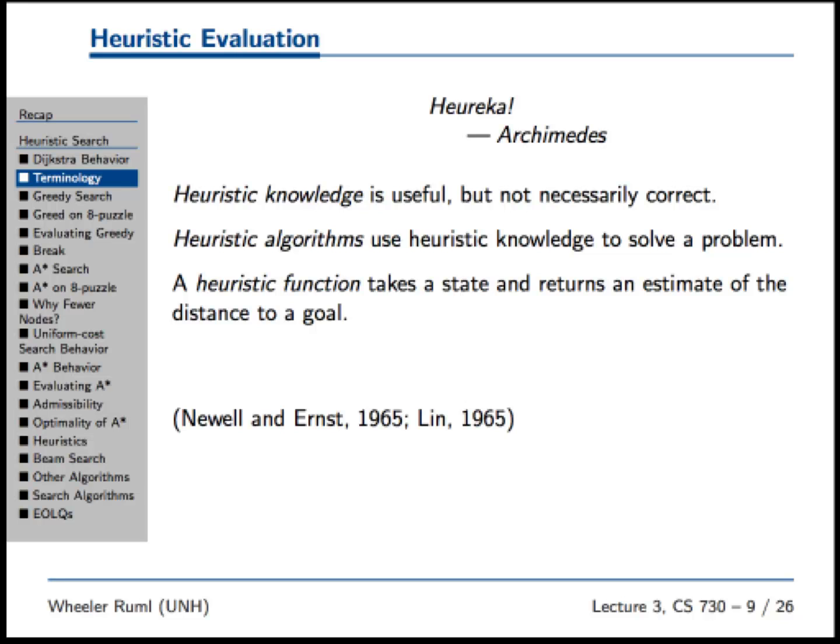Heuristic is used in modern times in a bunch of different ways and you have to keep them all straight. Heuristic knowledge is something that's useful but not necessarily correct — that's the most common definition. For example, you might have a heuristic for driving to work: if the light is red, take the left turn and the long way around because the light takes too long. If the light is green, go straight ahead. That's a heuristic.